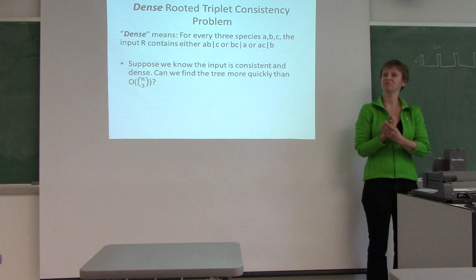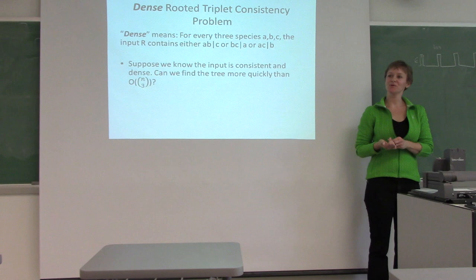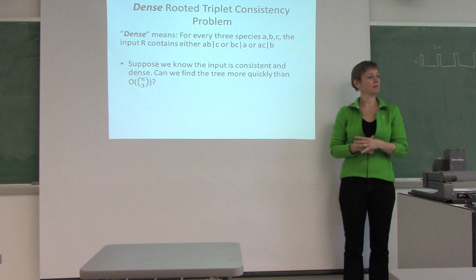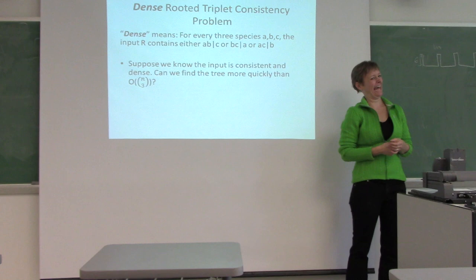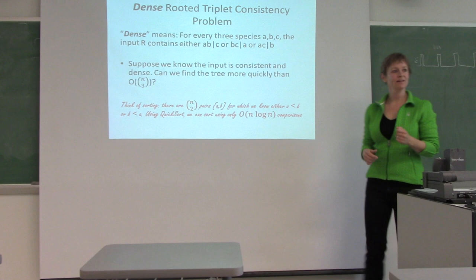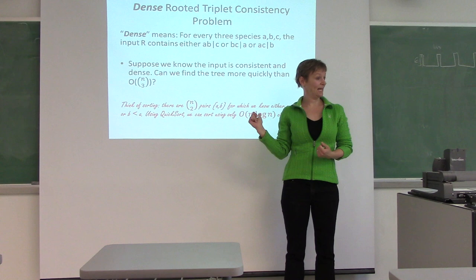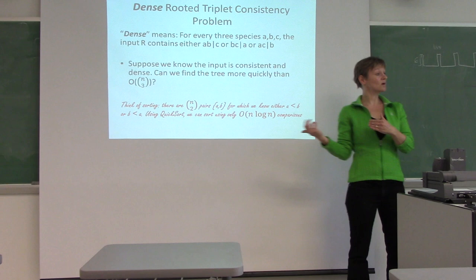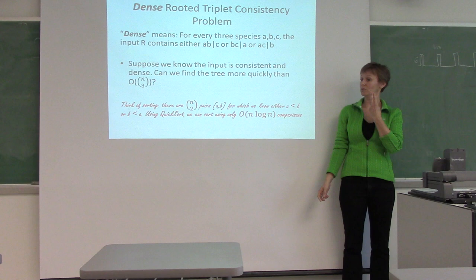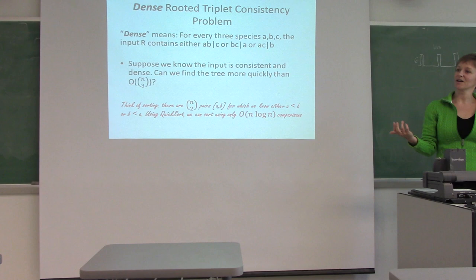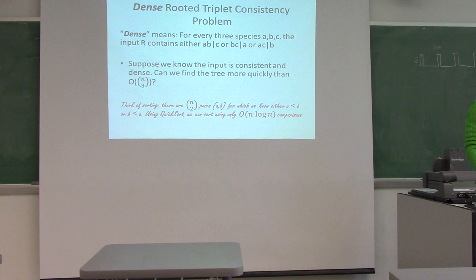Could we find a tree without actually looking at every triplet? You might think no, but think about sorting: you have N-choose-2 pieces of information, yet you can sort using only N log N comparisons. We want to do something analogous — use a quicksort-inspired approach — and we call that Quick Tree.